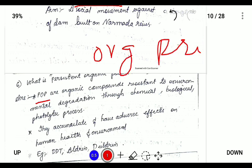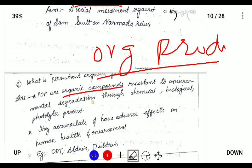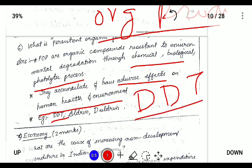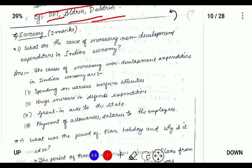What are Persistent Organic Pollutants (POPs)? Persistent organic pollutants are organic compounds that are resistant to environmental degradation through chemical, biological, and photolytic processes — meaning they do not degrade in the environment. They accumulate in the environment and cause adverse effects on human health and the environment. Some examples of persistent organic compounds are DDT (dichloro diphenyl trichloroethane), used as an insecticide but banned following the Stockholm Convention, as well as Aldrin and Dieldrin.